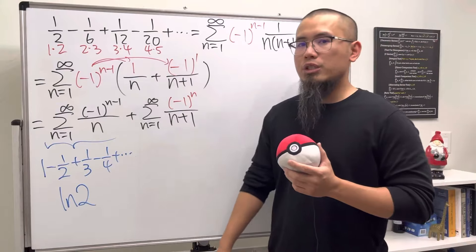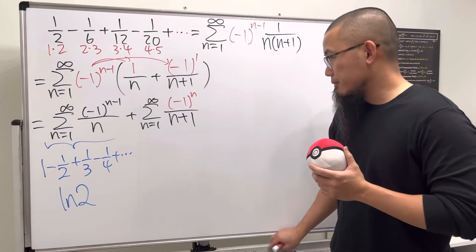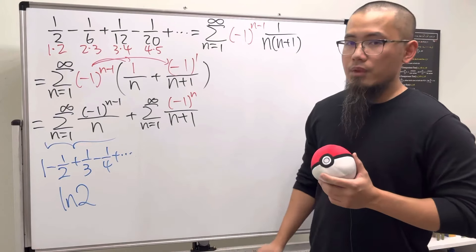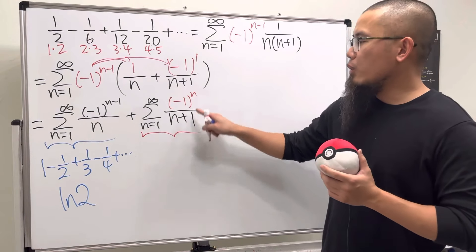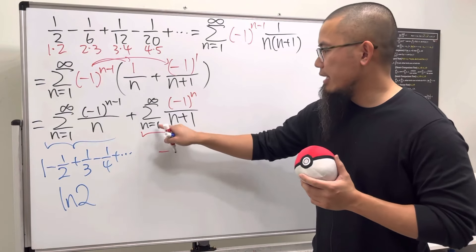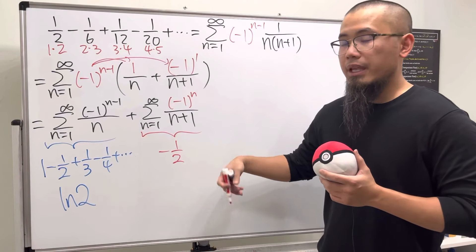All right, how about the second one? Again, let me just kind of expand it for you guys. Plug in 1, now we actually get negative first, and then we have 2 on the bottom, so we have -1/2. Next, plug in 2, we get positive 1/3.